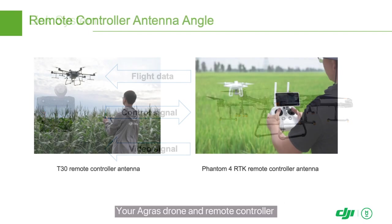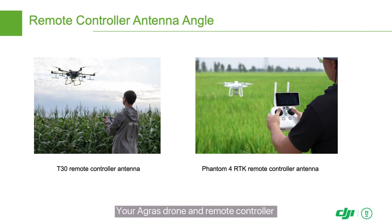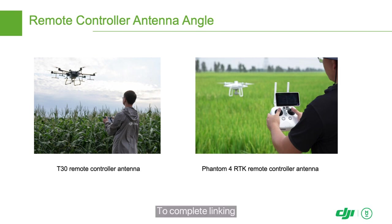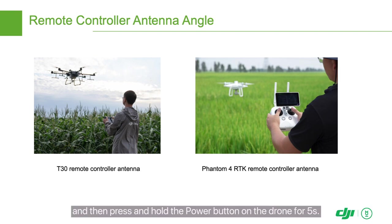Your Agris drone and remote controller have already been linked prior to delivery. You won't need to link them unless you change the remote controller. To complete linking, tap linking on the remote control app, and then press and hold the power button on the drone for 5 seconds.